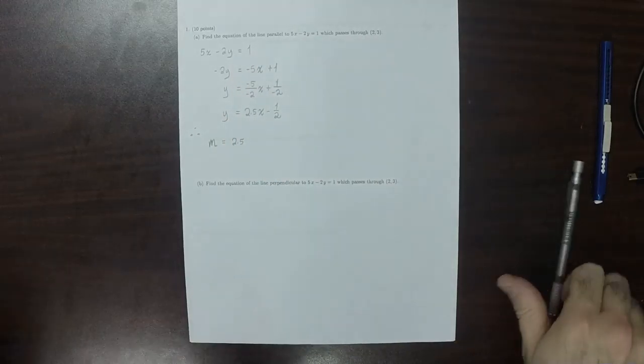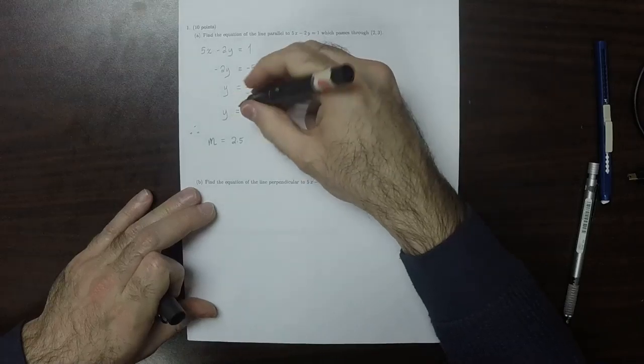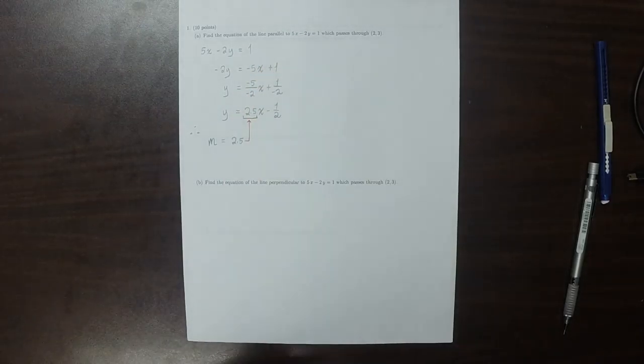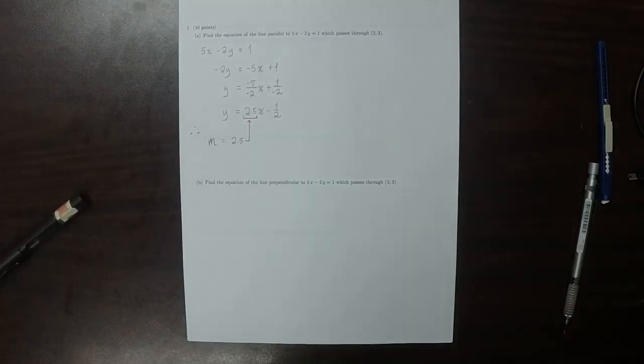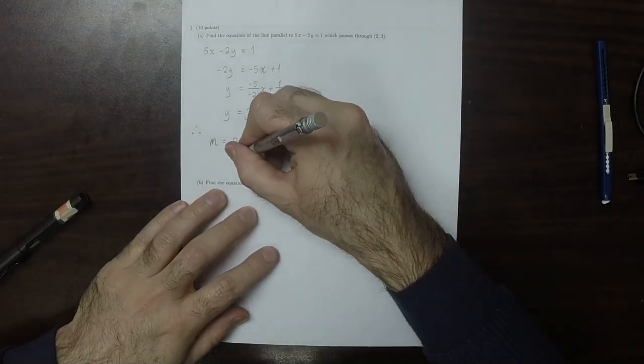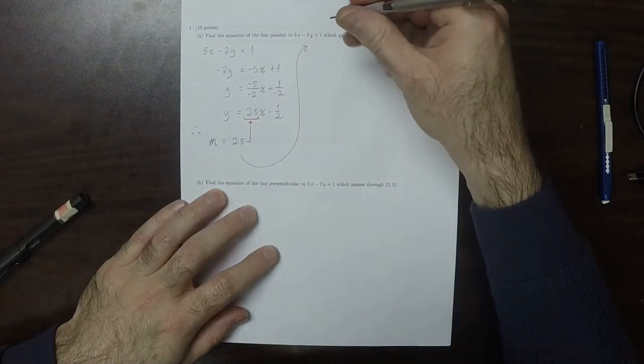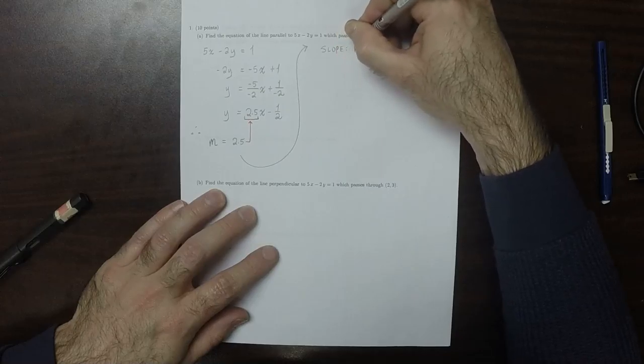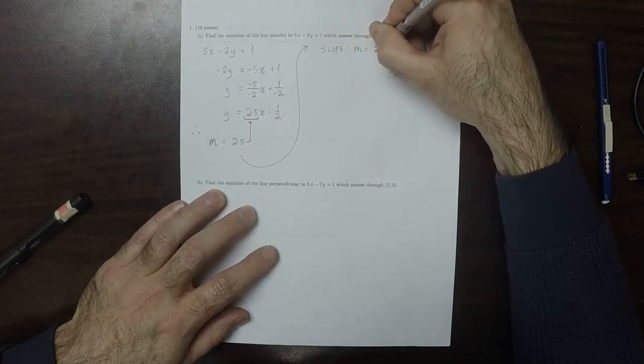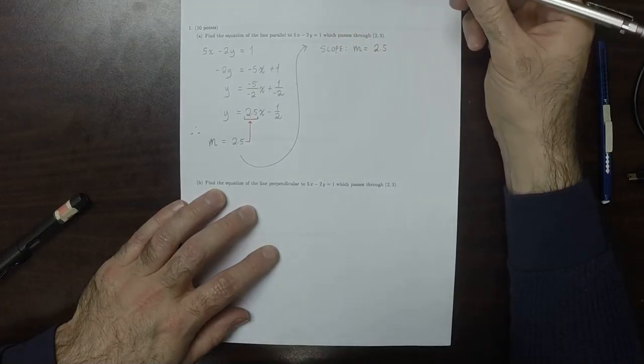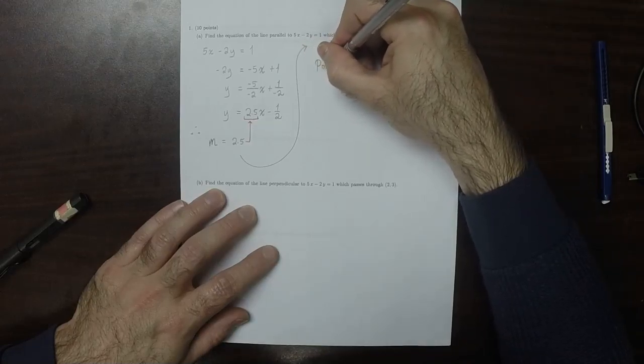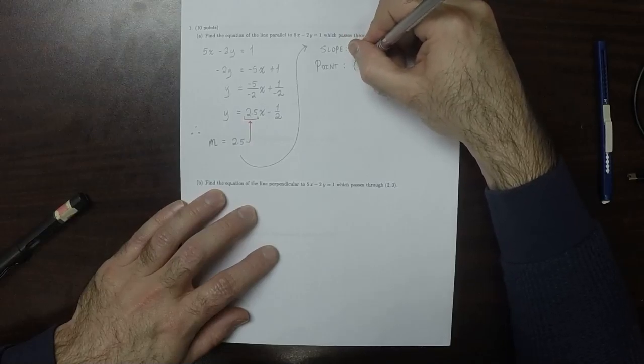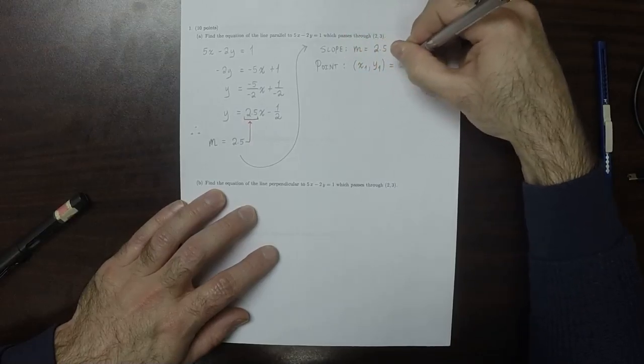Because the slope of the line that we were given is 2.5, and we want to make a parallel line, therefore the slope that we want is m equal to 2.5. And the point that we want is that one. So x1, y1 equal to 2, 3.